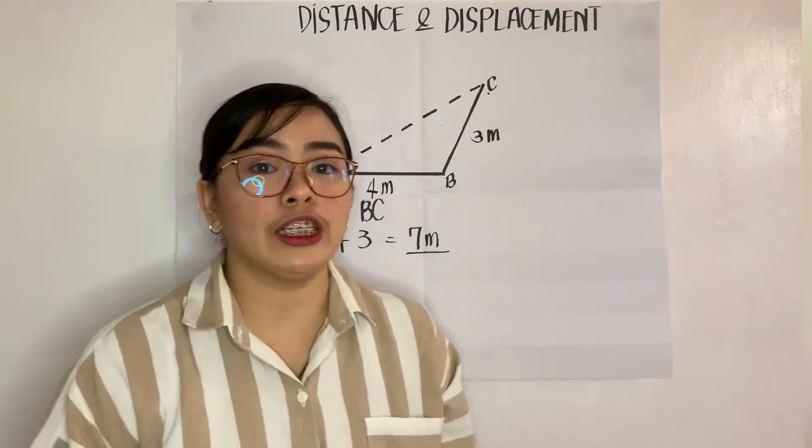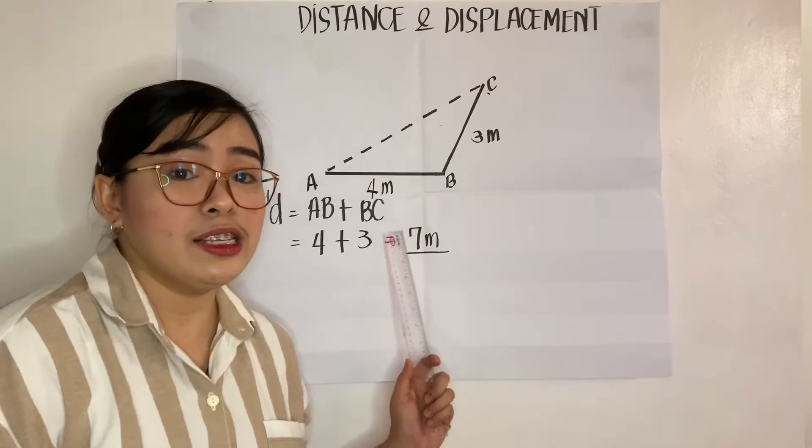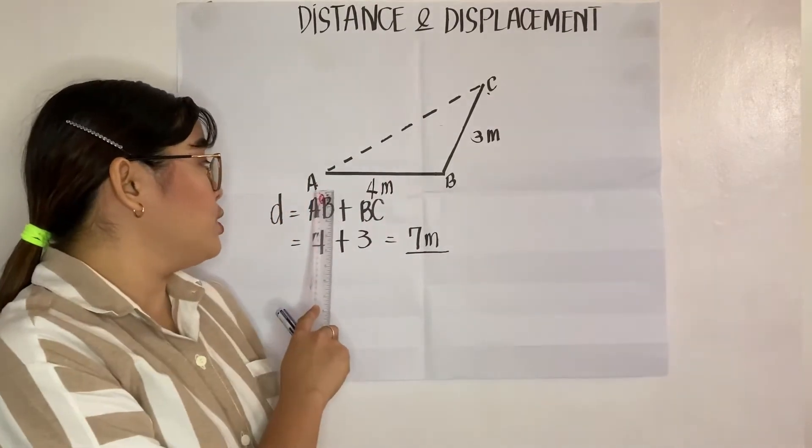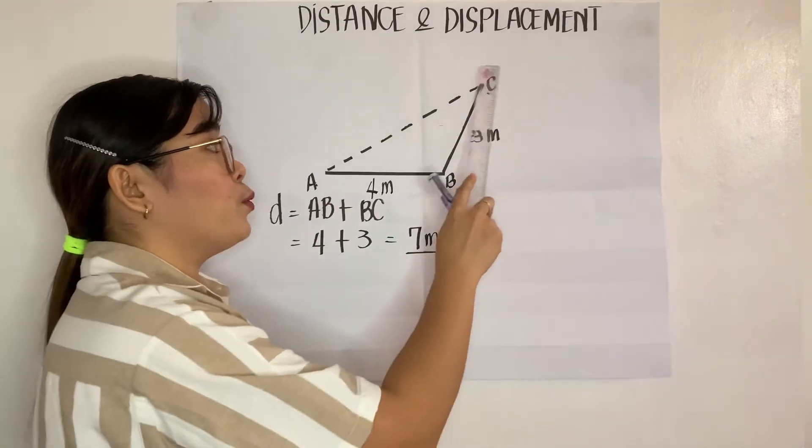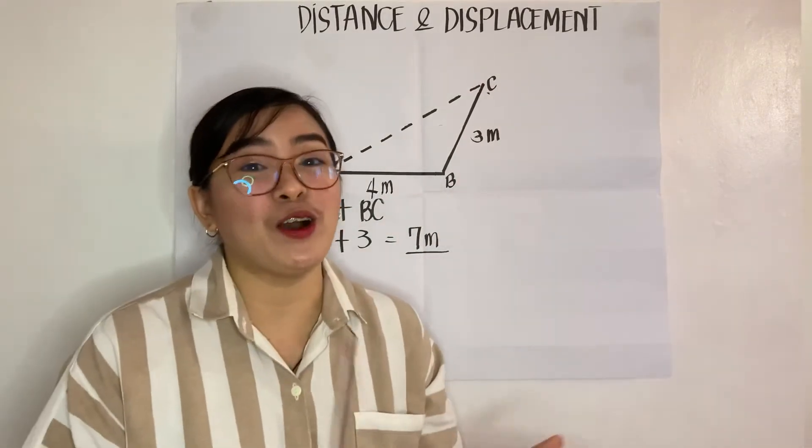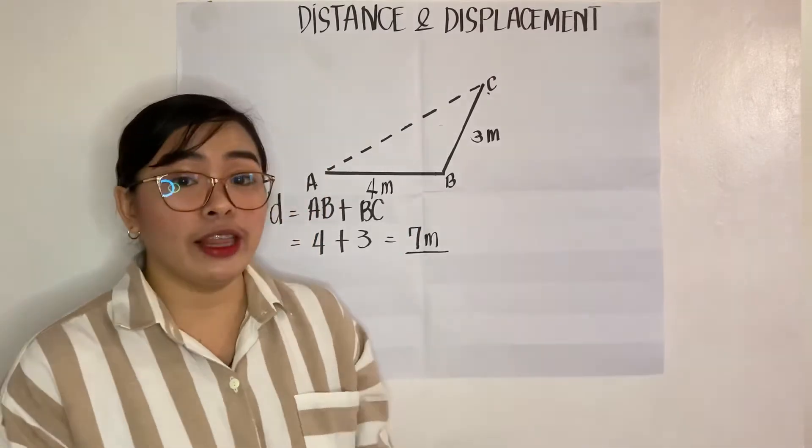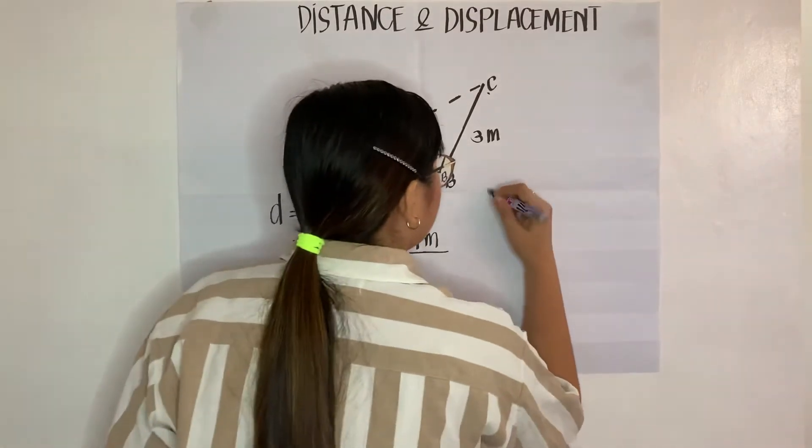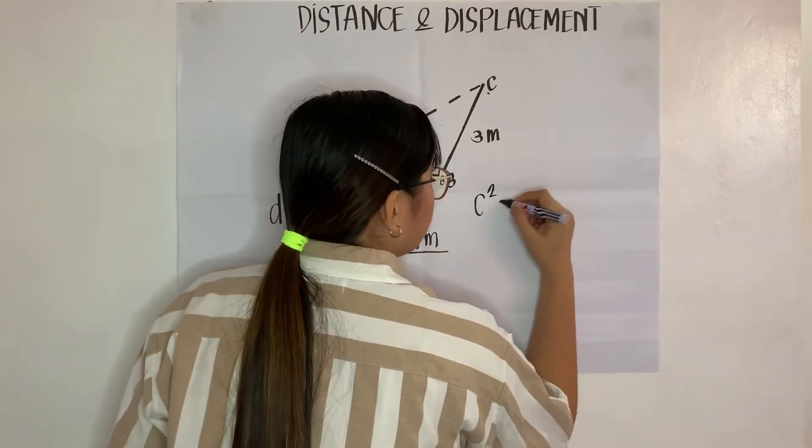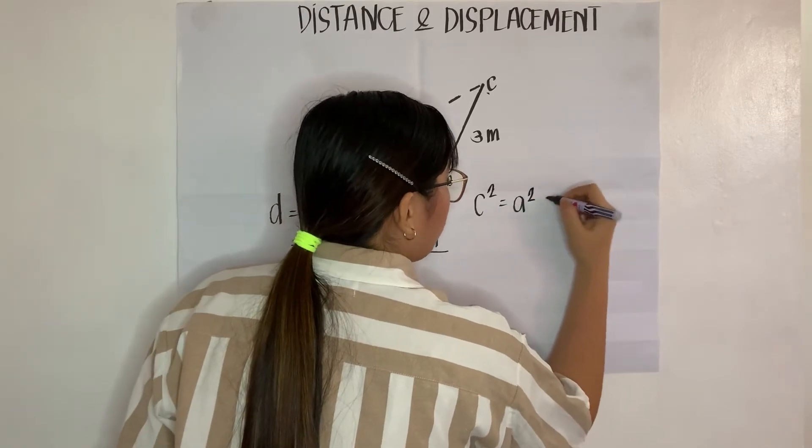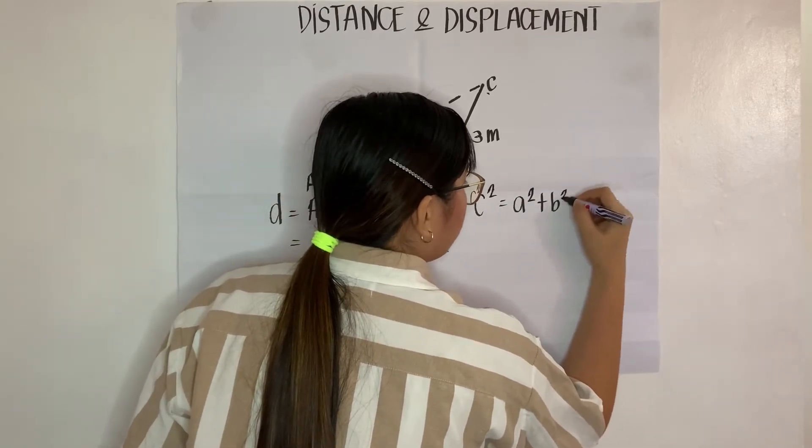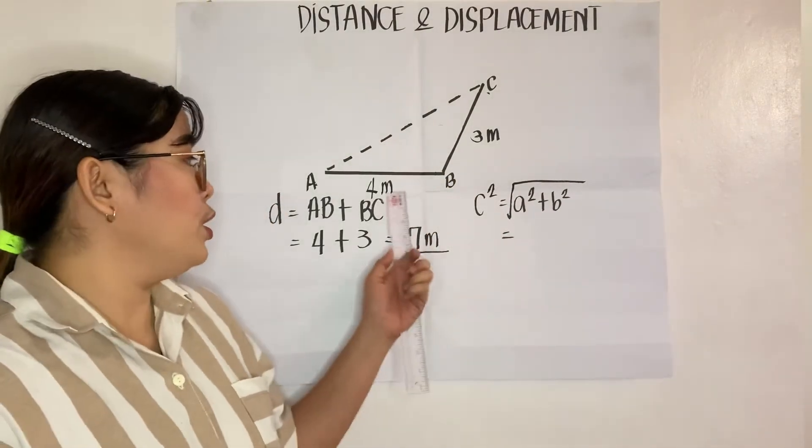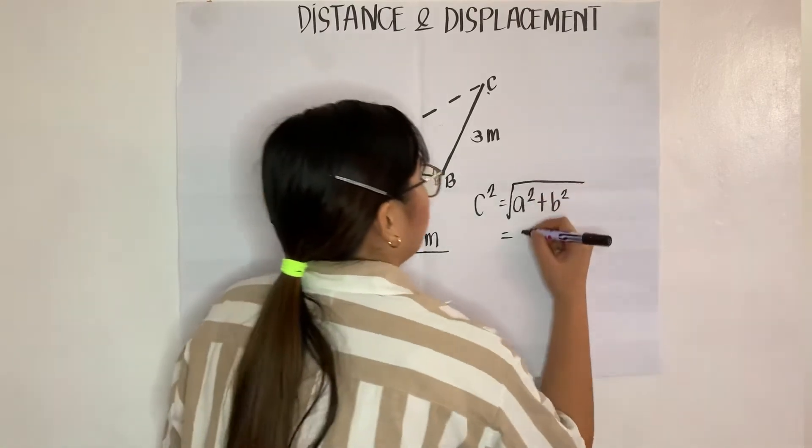In displacement, we are talking about distance between two points. So, where is our two points? Two points is this one point A and point C. In this example, we are going to use the Pythagorean theorem to get the displacement. Our Pythagorean theorem formula is C squared is equal to A squared plus B squared. This is our formula and we need to substitute that 4